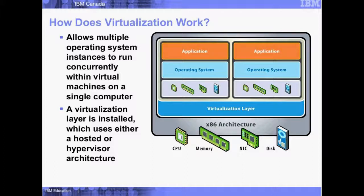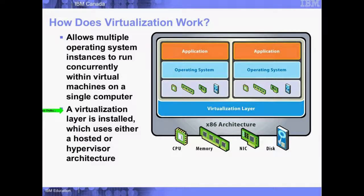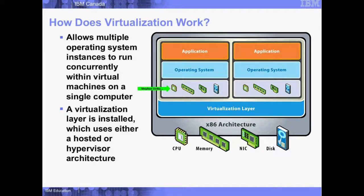How does virtualization work? It allows multiple operating system instances to run concurrently within virtual machines on a single computer. We have our single host machine with hardware, and in this picture, two individual virtual machines. A virtualization layer is installed using either a hosted or hypervisor architecture — the hypervisor sits right on top of our physical hardware. Each virtual machine gets its own virtual hardware: virtual CPU, memory, disk, and network. We can control all that when building our VMs — specify how many processors and how much memory.